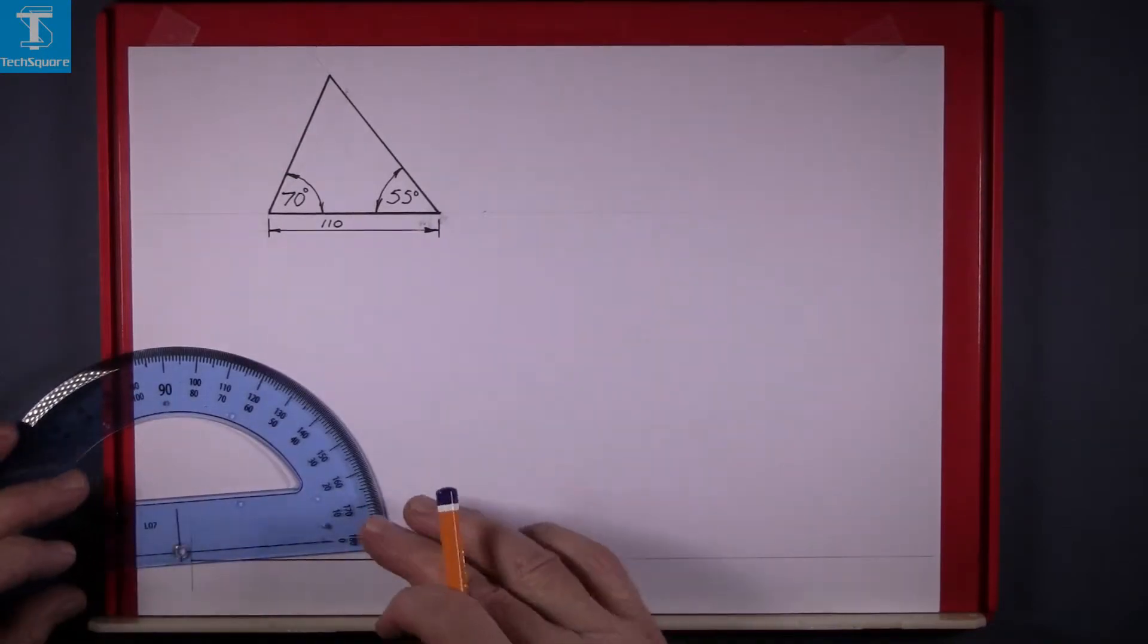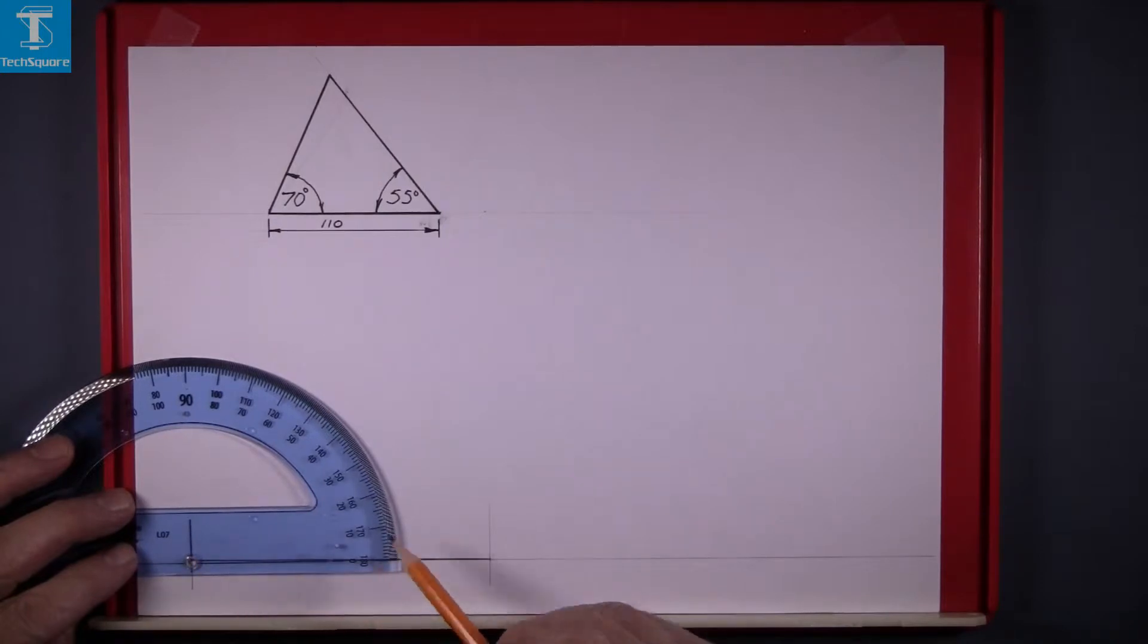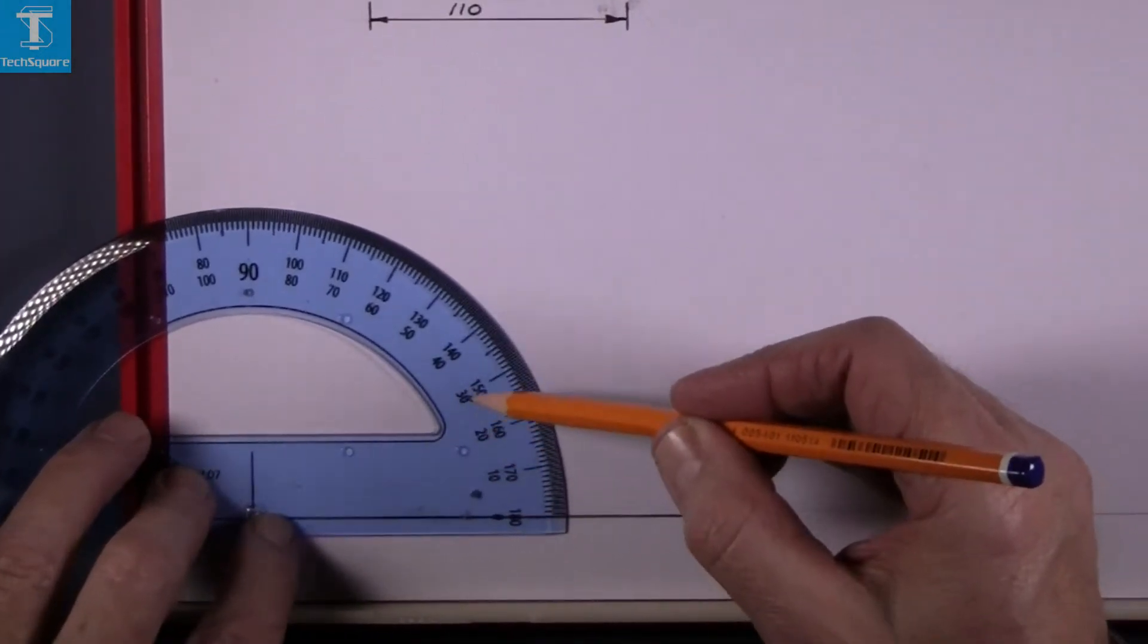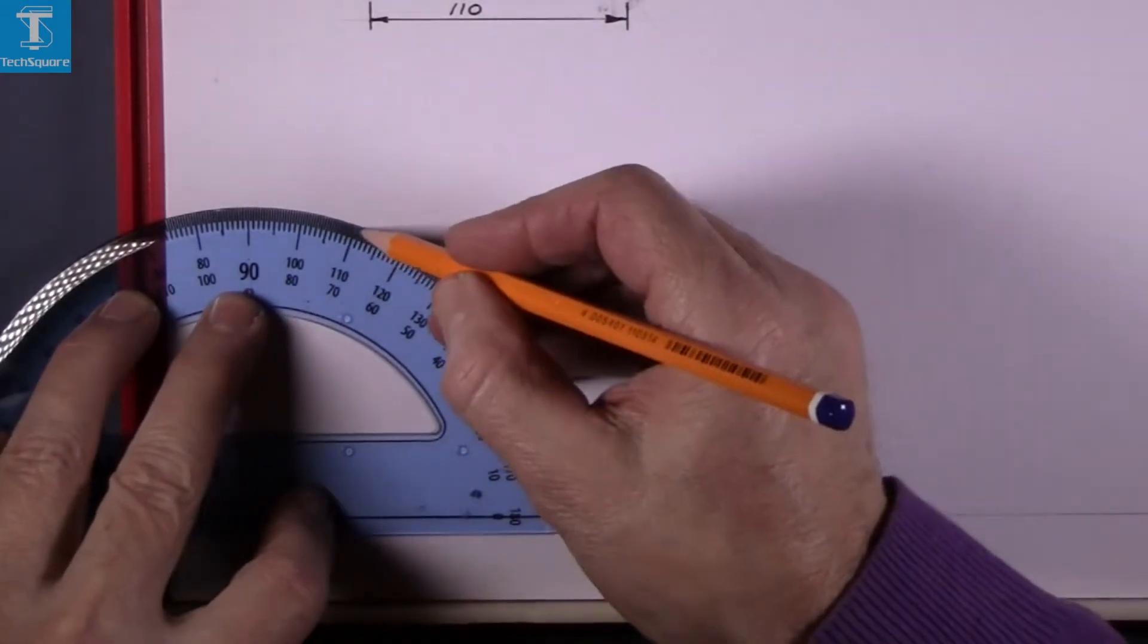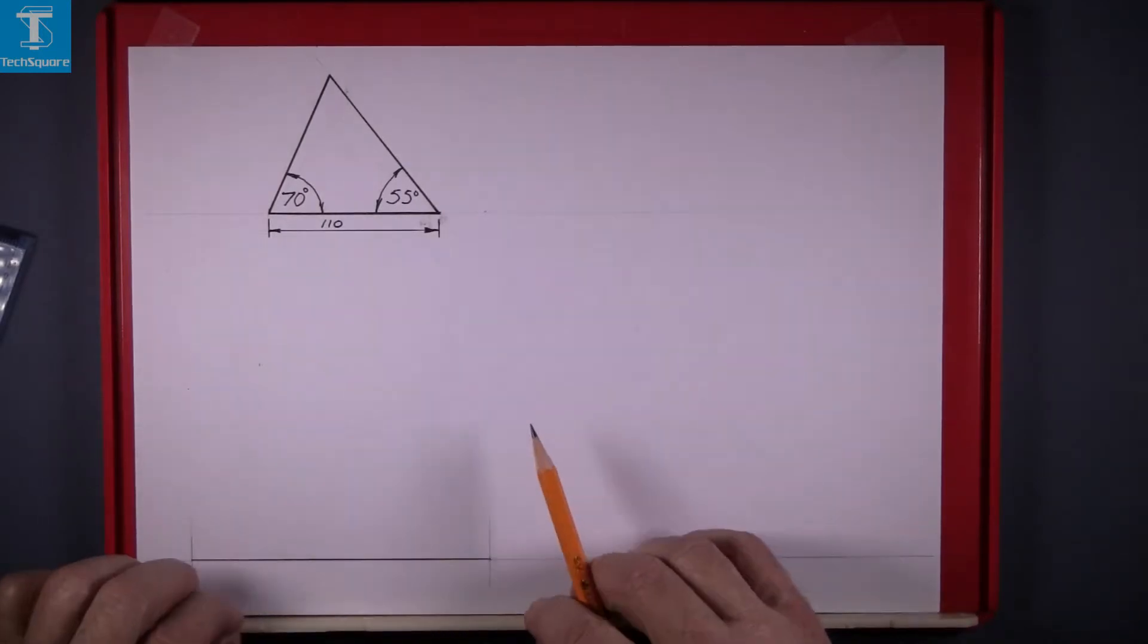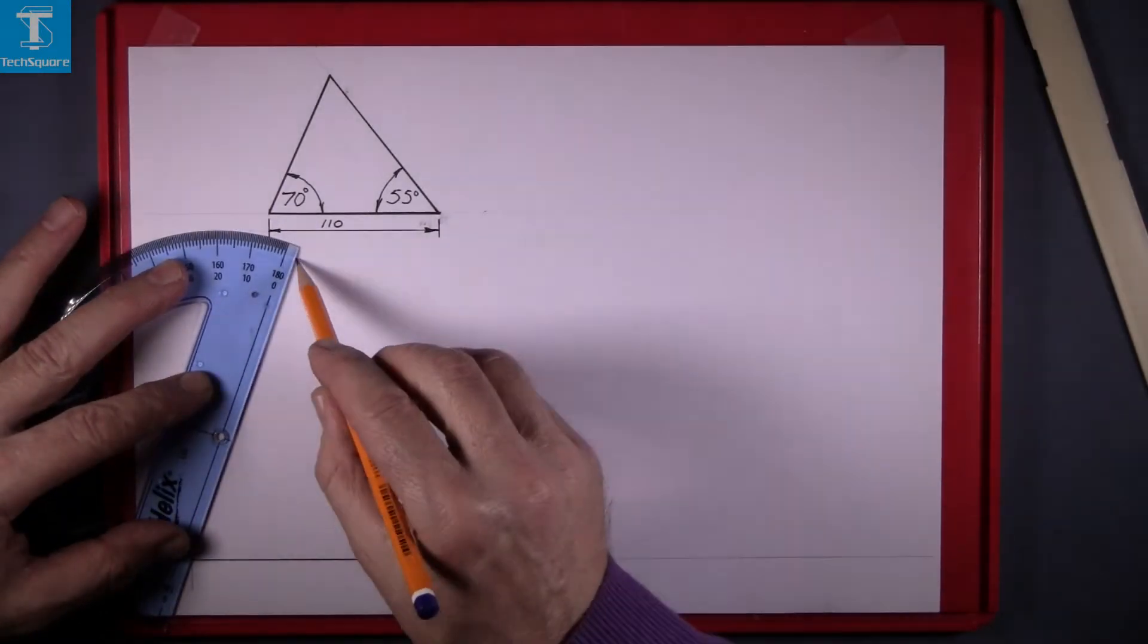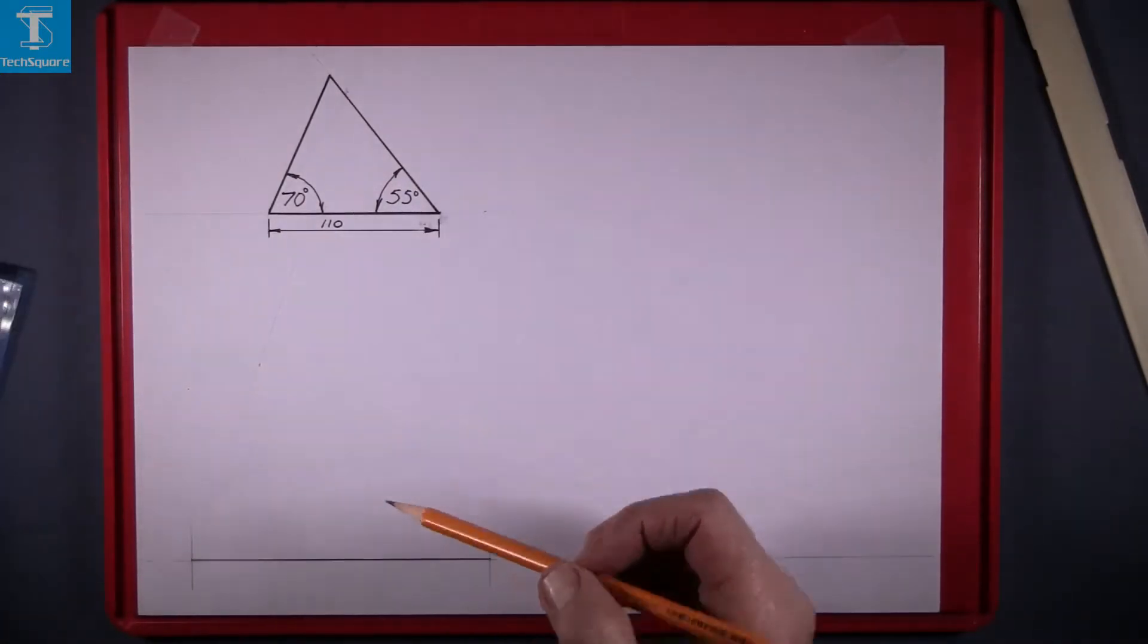Position the protractor on the sheet so the center of the protractor is in line with the end of the line and count up the angle: 10, 20, 30, 40, 50, 60, 70. Mark that point there at 70 and then join that point down to the corner of the line at the bottom, or the end of the line, and that's your first line done. Let's draw it in lightly.